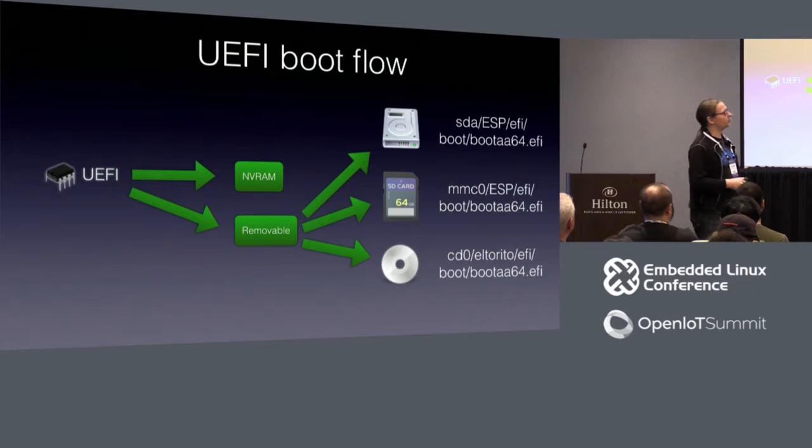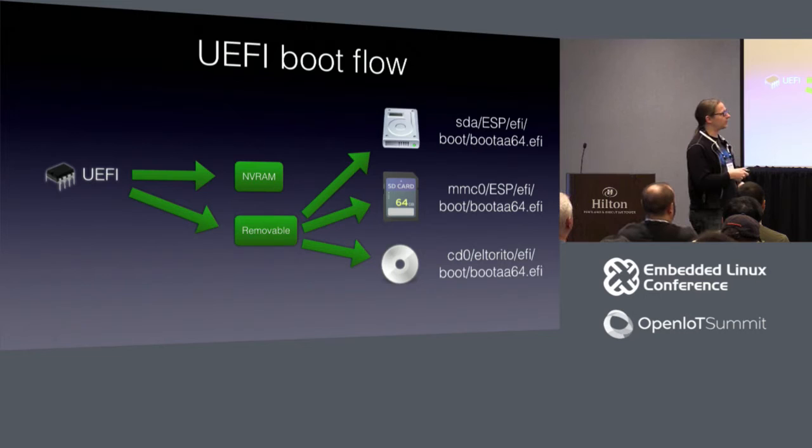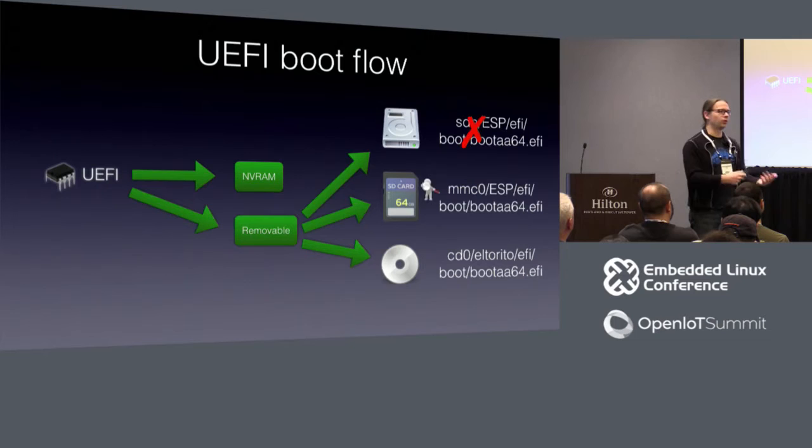That removable medium stuff basically has a predefined file name — it's per architecture, so you have different default file names. It searches on every device it knows of for that file name. It's as simple as that: do I have that file name on my disk? No. On my SD card? No, there's no SD card. On a CD-ROM that's plugged in somewhere? Yes. Awesome. Next step.